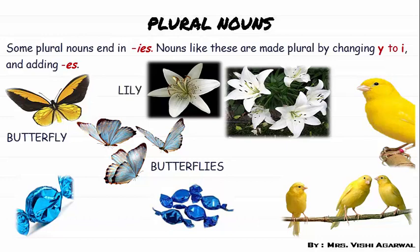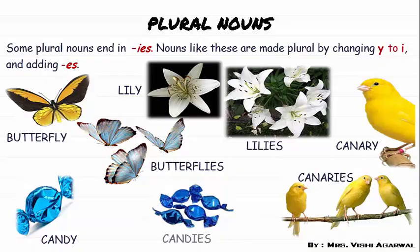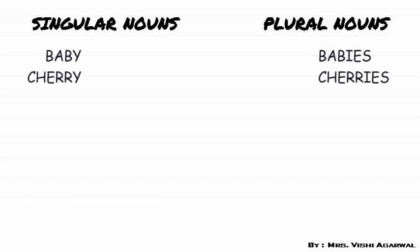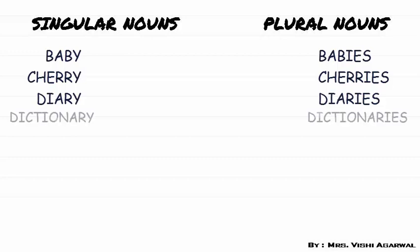The same applies to lily — plural is lilies; canary becomes canaries; candy becomes candies. Some more examples of words ending with Y: baby becomes babies, cherry becomes cherries, diary becomes diaries, dictionary becomes dictionaries, ferry becomes fairies, and so on.